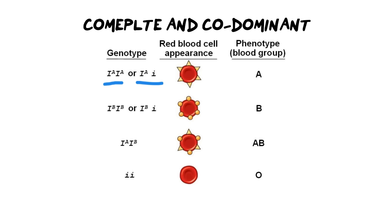Let's break the blood groups into the complete and the co-dominant groups. If you remember from my previous video on types of dominance, co-dominance means that two traits share equal space in the phenotypic expression — in other words, your two traits will be equally visible. We see this as an example when we look at blood group AB. Looking at the genotype, we use two capital letter I's with the superscript A and B and they are equally expressed, so therefore we write both AB in the phenotype.